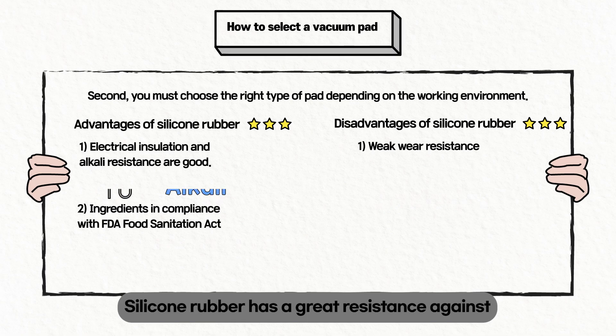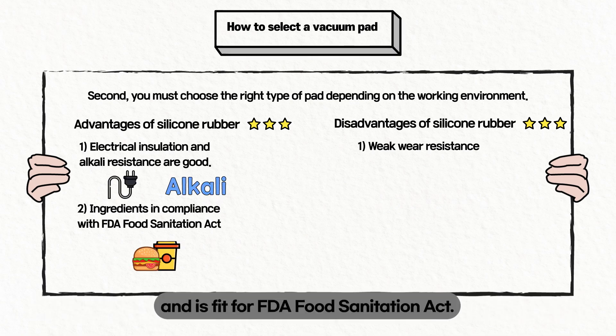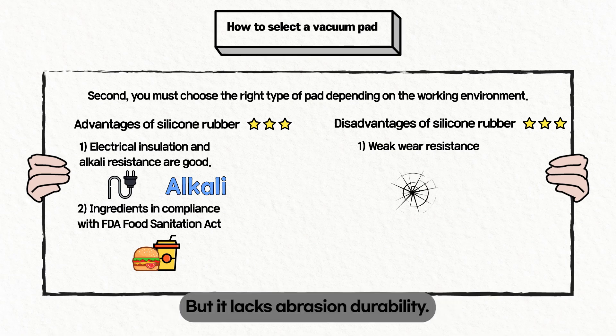Silicon rubber has great resistance against electric insulation and alkalinity and is fit for FDA and food sanitation applications, but it lacks abrasion durability.